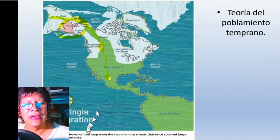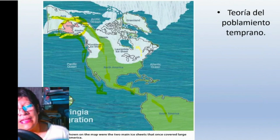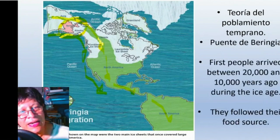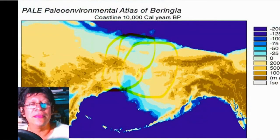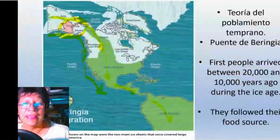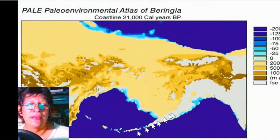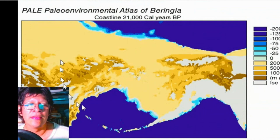I explained everything and give data. This video explains how human beings were able to cross what is now known as the Strait of Bering. Here is Asia, this is Alaska — North America.